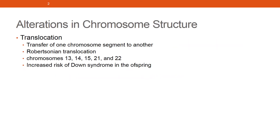Translocation can be described as an exchange of genetic material between chromosomes, where a segment of one chromosome is transferred to another. Among the many types of translocation, it's worth mentioning Robertsonian translocation.